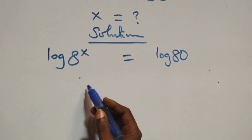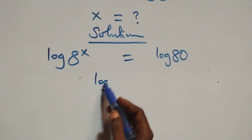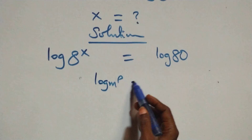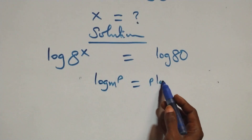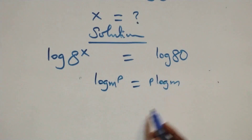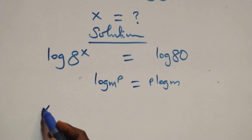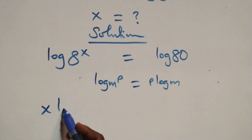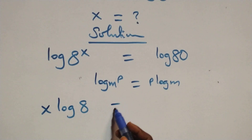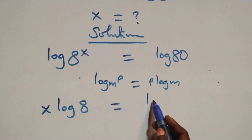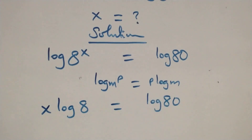We apply the power rule of logarithms: when we have log m raised to power p, it is the same as p log m. So here we get x log 8 equals log 80.